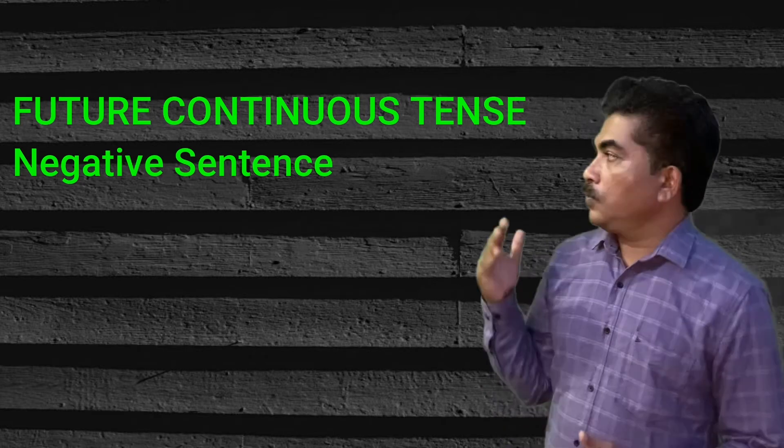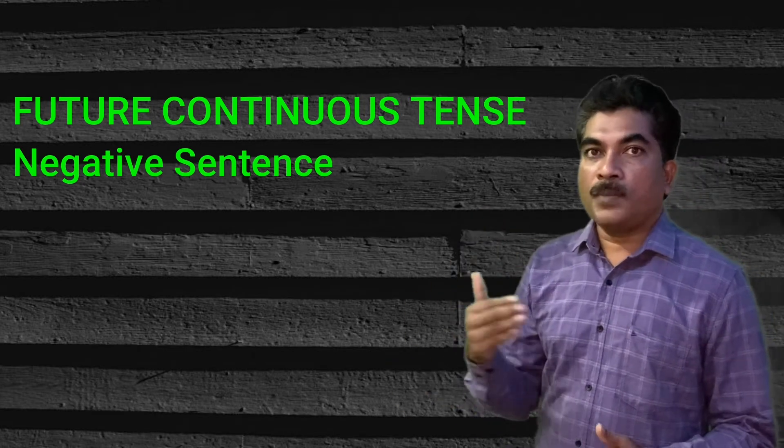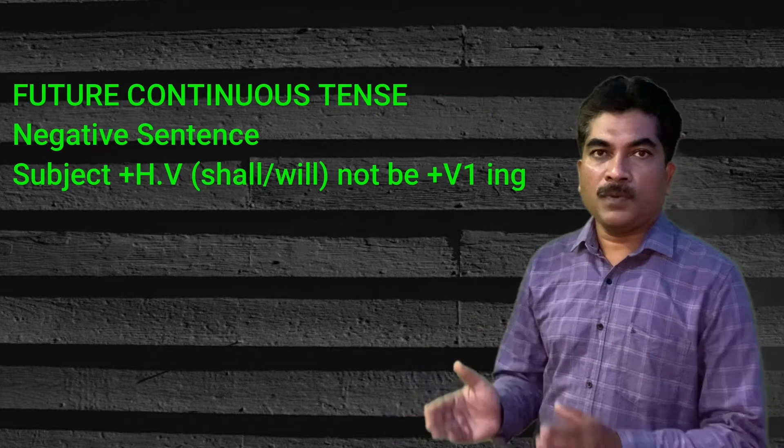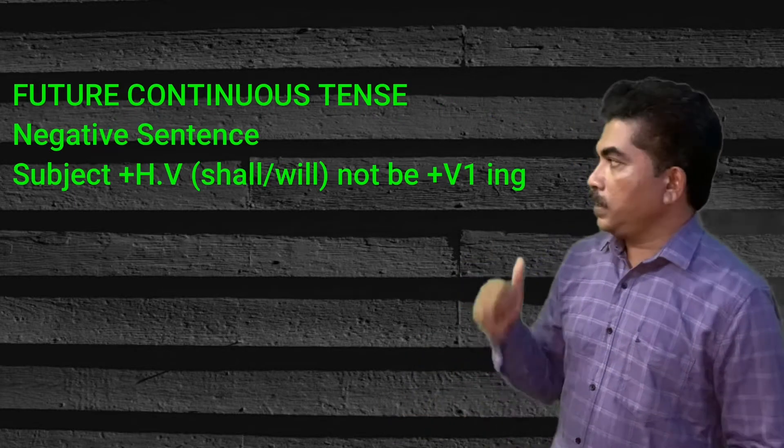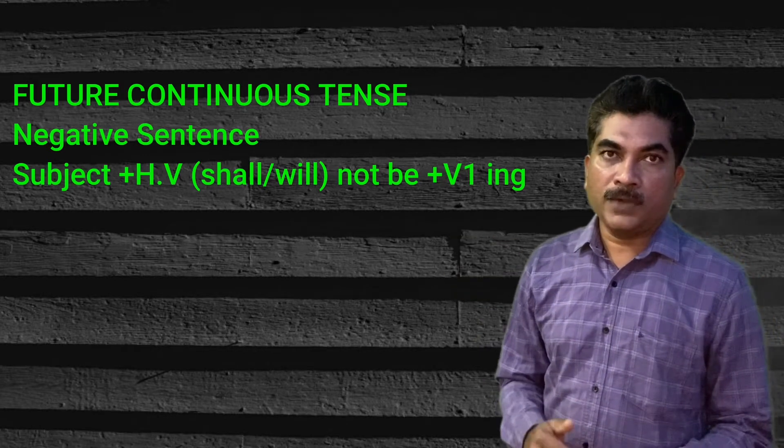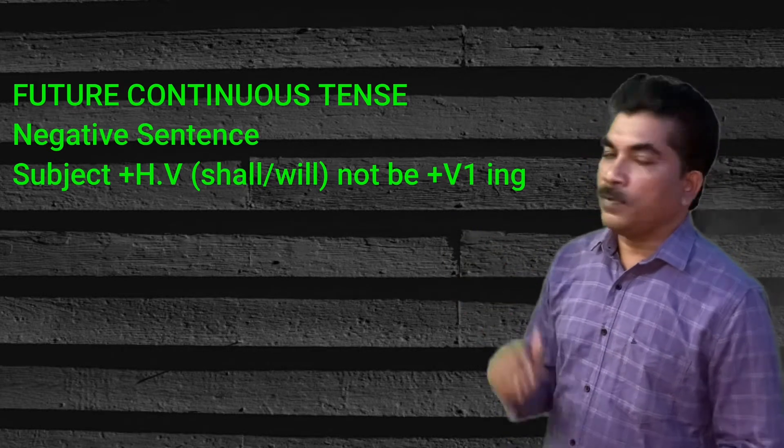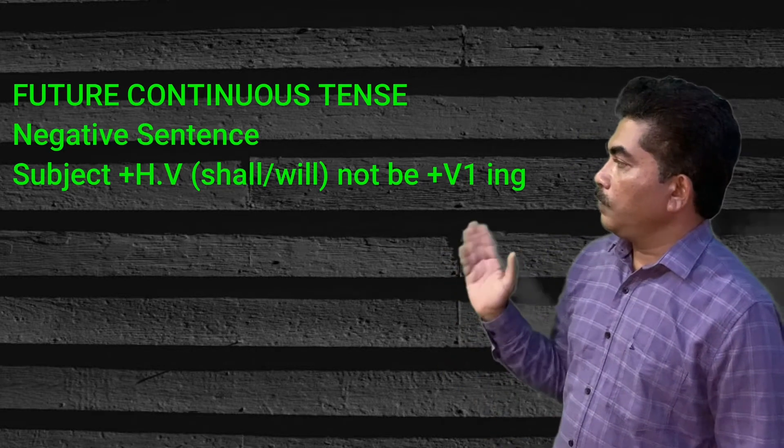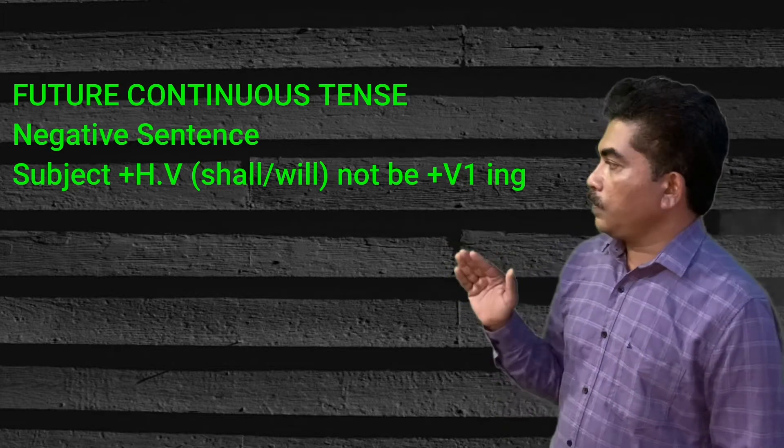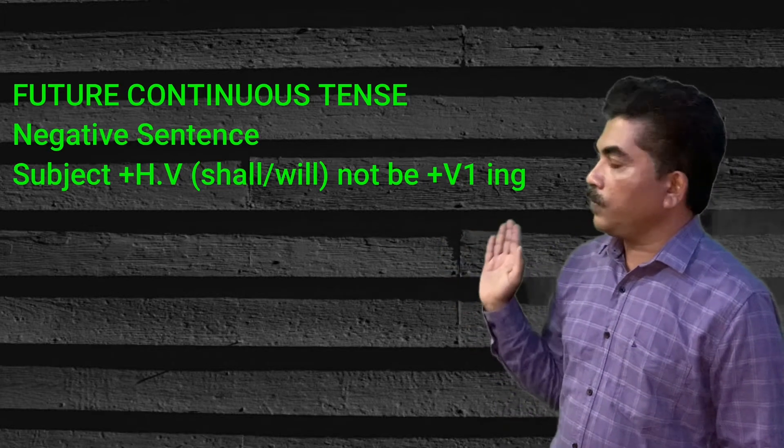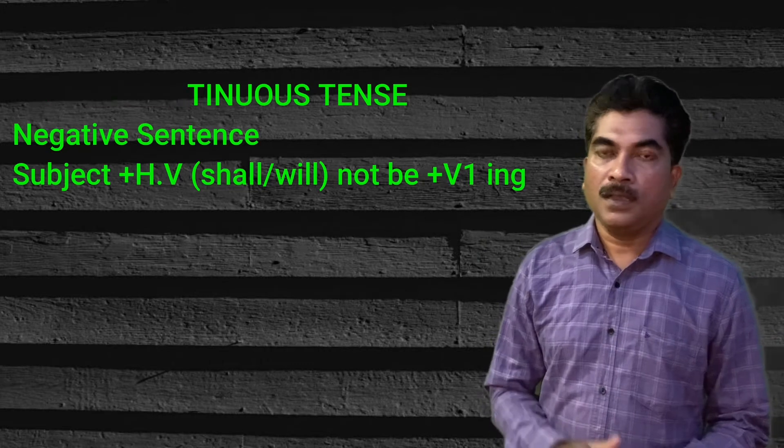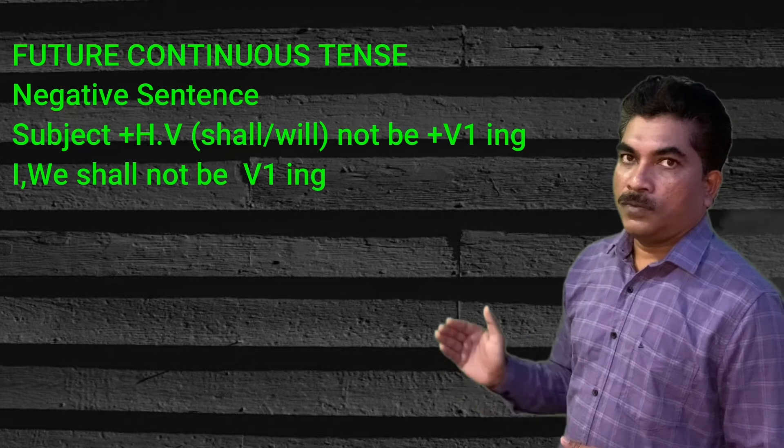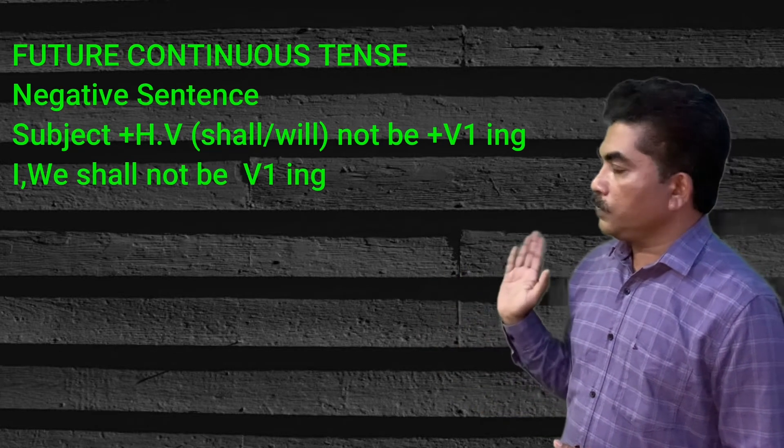For future continuous negative sentences, the formation is the same as affirmative sentences, but we add 'not'. First comes the subject, then the helping verb with 'not' added.